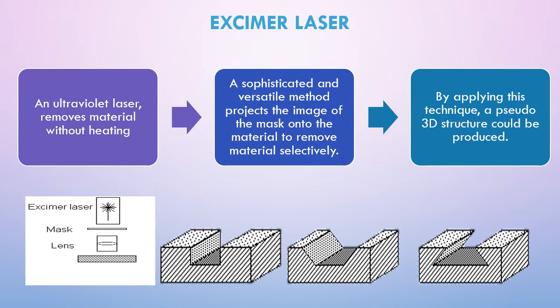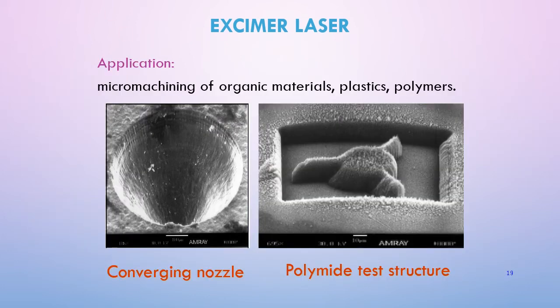Products made with the excimer laser can include straight lines and angled structures as shown in the pictures. Excimer laser is mostly used for micromachining of organic materials, plastics, and polymers. Examples of products include a converging nozzle and a polyimide test structure.